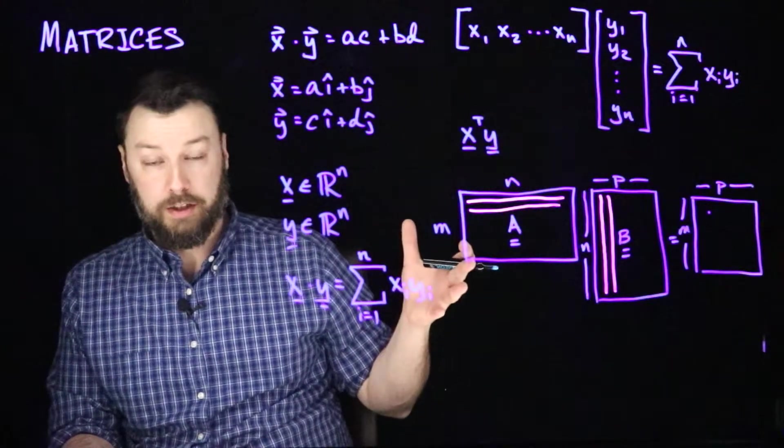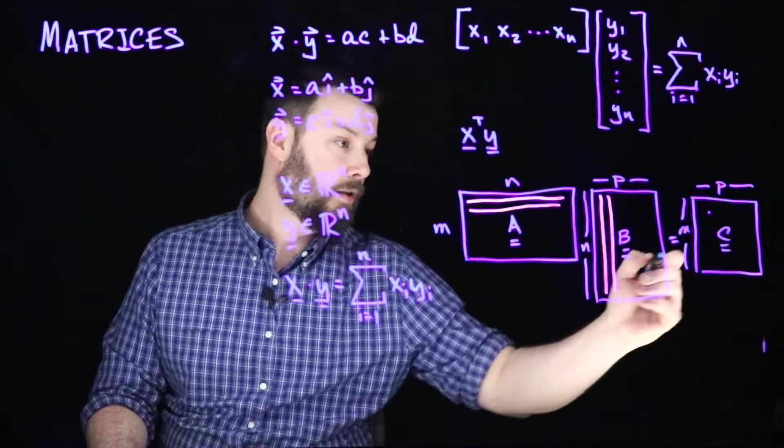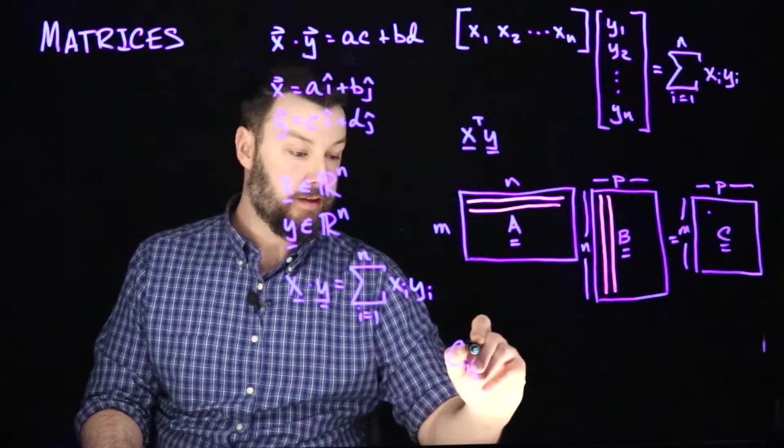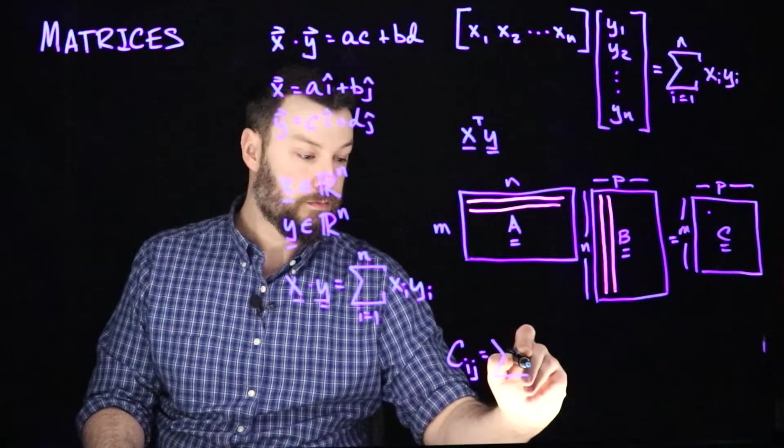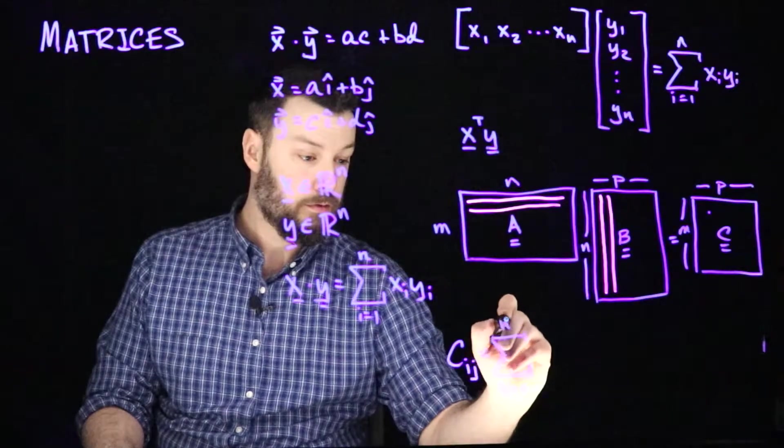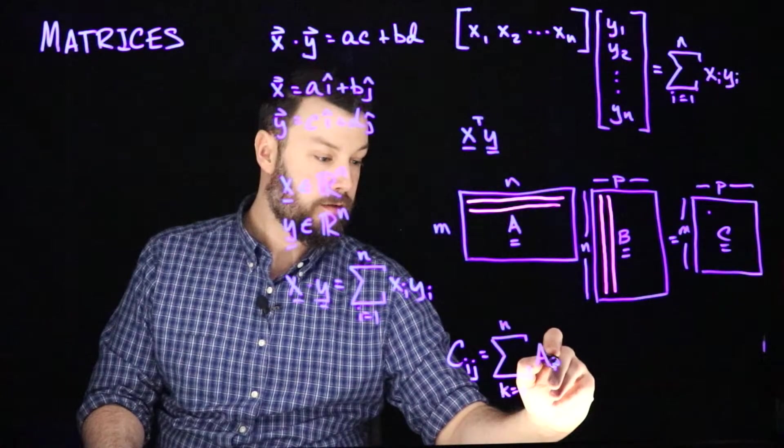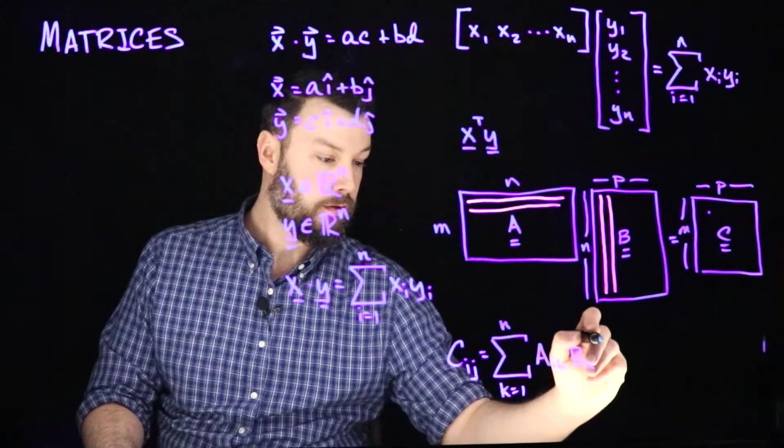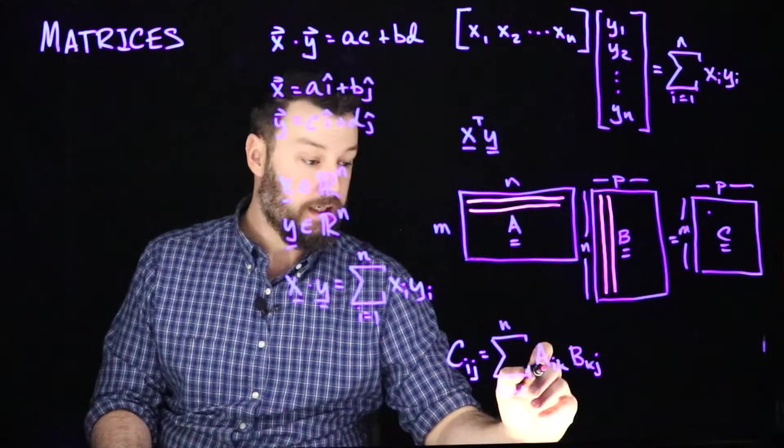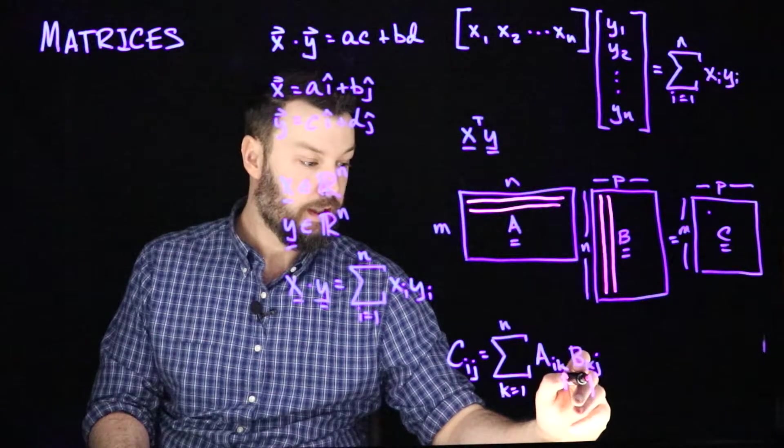So let's imagine that we did this and let's call this matrix C. Then if we were to think about the particular entry in C, the ijth entry in C, then that is going to be a sum from k equals 1 up to the inner dimension n of aik and bkj. So the key thing to notice here is that we're grabbing a row with the dummy variable k, and here we're grabbing a column with the dummy variable k in the first entry in the index.